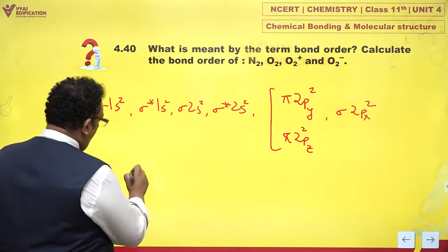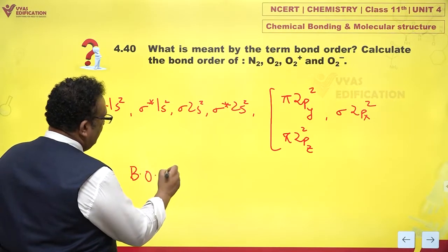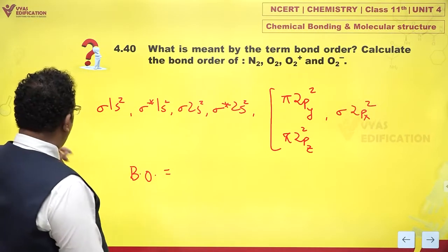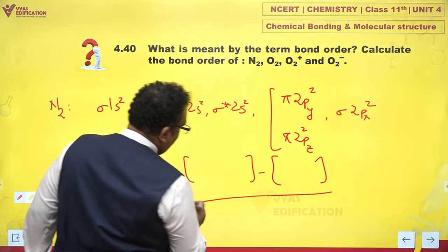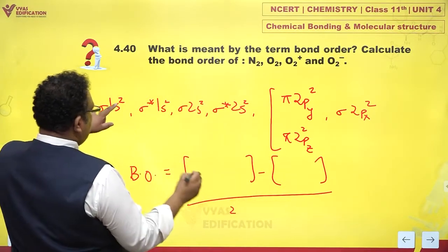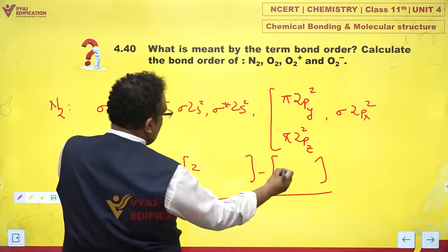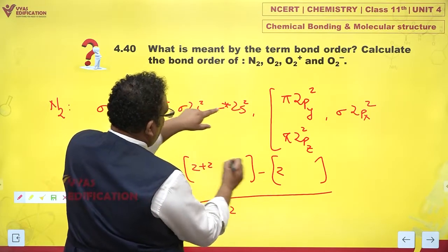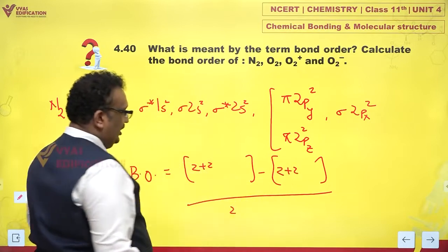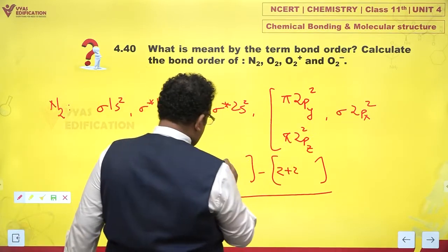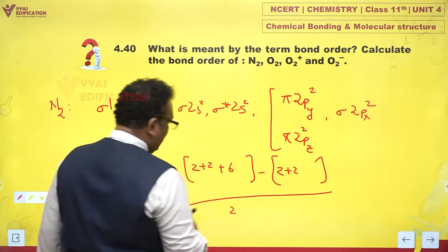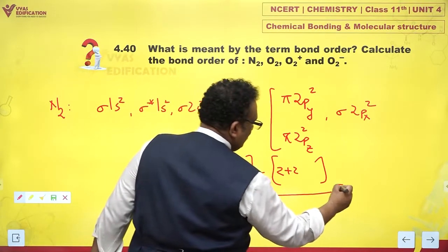Using the formula, bond order is equal to the number of electrons in bonding orbitals minus antibonding orbitals upon 2. This is 2 and this is 2, this is 2 and this is 2. Actually they will cancel. 2 plus 2 plus 2 plus 2, how much is this? This comes out to be 3.